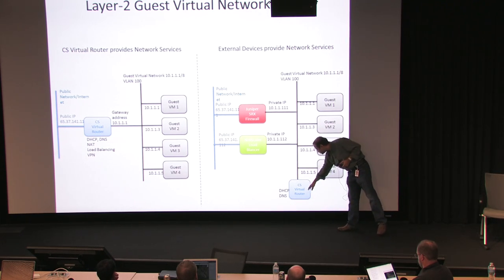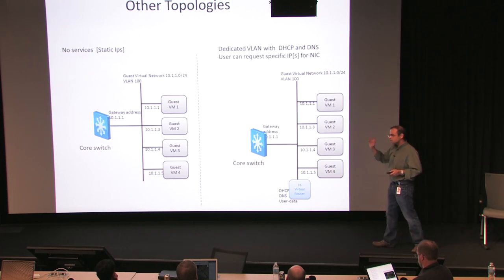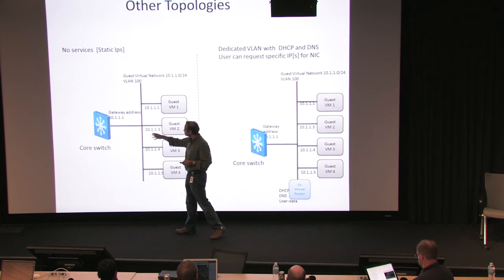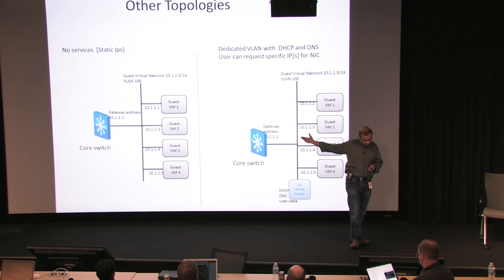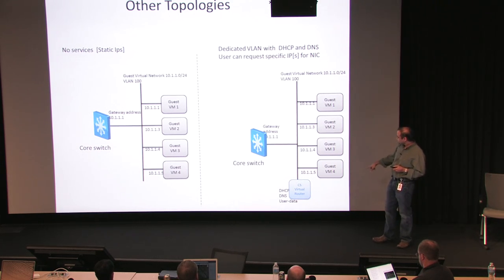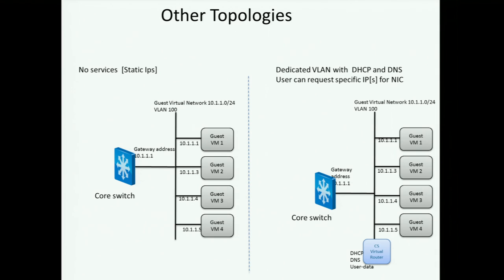In that case, the virtual router just provides DHCP and DNS. You could also have a network with no services, because some people want static IP addresses — no DHCP, nothing. All you get is a gateway service and you are free to assign whatever IP address you want. Not particularly popular in the public cloud due to security concerns, but fairly popular in the enterprise. We do support DHCP, DNS, and user data with the virtual router. When you deploy a VM and ask for a specific IP, when the VM sends out a DHCP request, we match it to the MAC address and assign that particular IP.